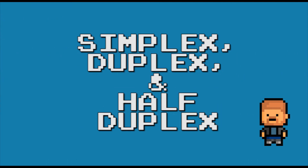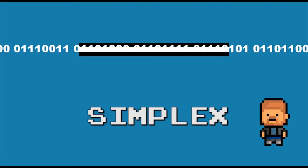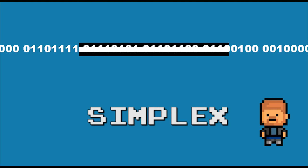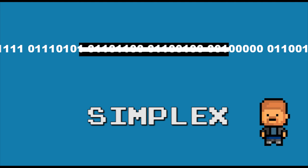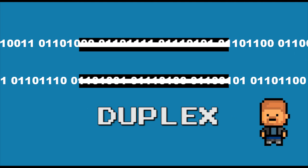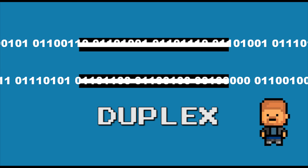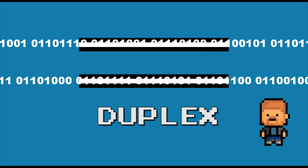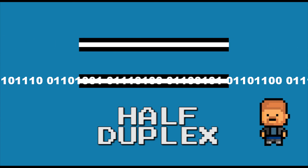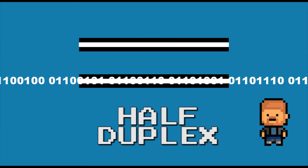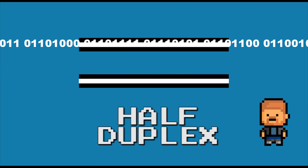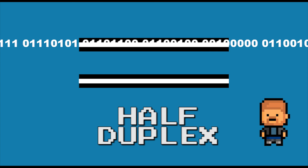While communication takes place, it can be done using three different methods. The simplest is simplex transmission, which is the sending of data in one direction only. Duplex transmission is the sending of data in both directions at the same time. Finally, half-duplex transmission is the sending of data in both directions, but only one direction at a time.